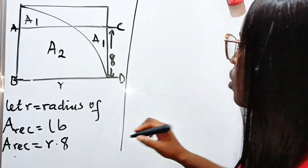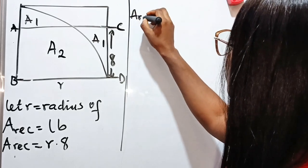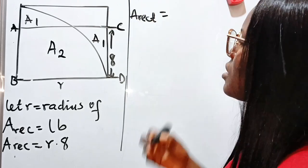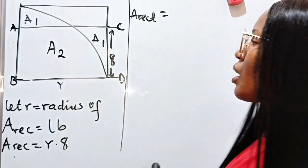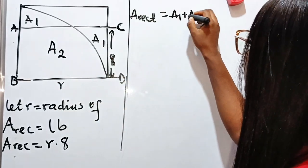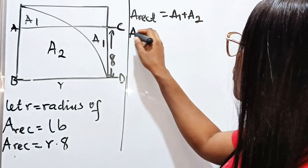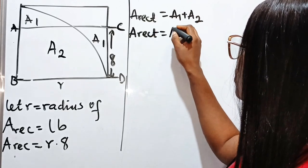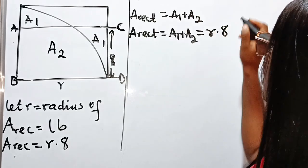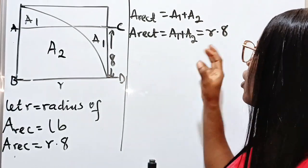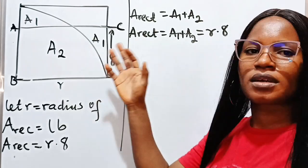Now, also, area of the rectangle is equal to A1 plus A2. So that means that area of the rectangle is equal to A1 plus A2, which is also equal to R multiplied by 8. Now, you're going to have this in mind while considering this next option.